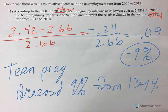So therefore, teen pregnancy decreased 9% from 2013 to 2014. It's only a 0.24 percentage point decrease, but that's a 9% relative change. Again, it sounds very different depending on which measure you look at.